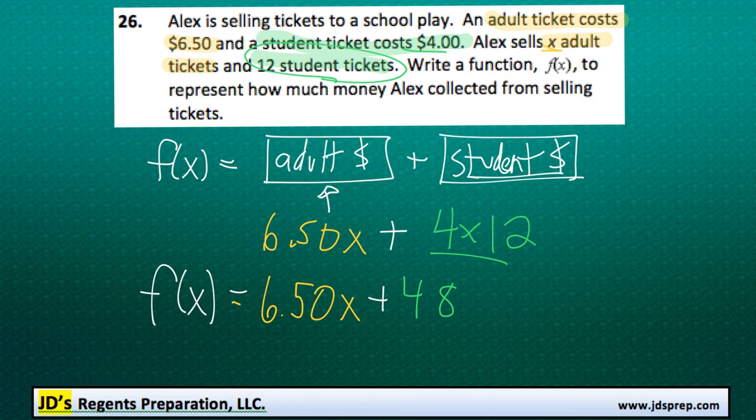And if we're writing this with proper math grammar, it's probably better not to include that zero there, so it's really just 6.5X plus 48.